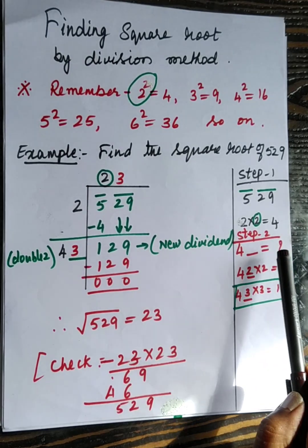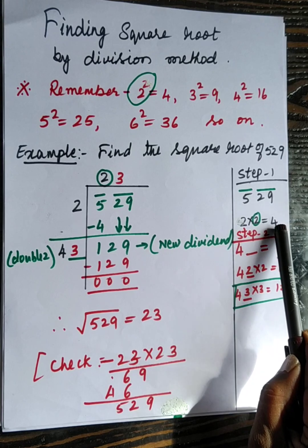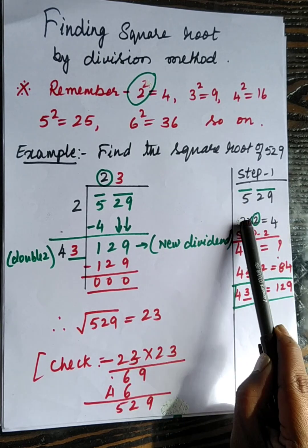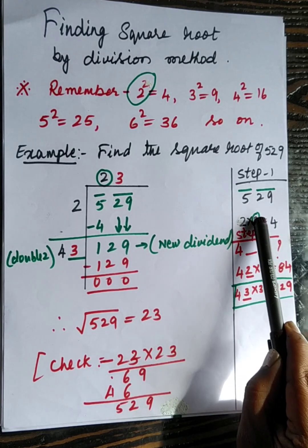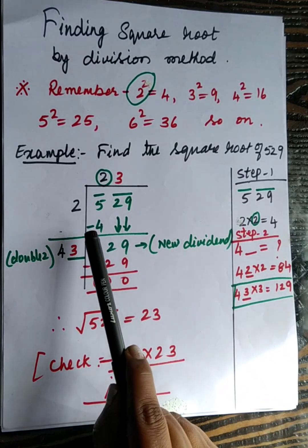Now you select a number so that when you square it, it's less than 5. So 2 squared is 4, and 4 is less than this 5. So select this number as quotient.